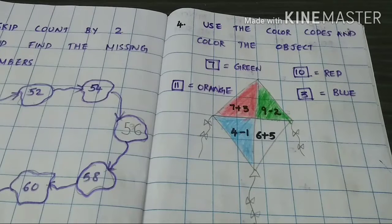6 plus 5, 7, 8, 9, 10, 11. So we have to color orange.